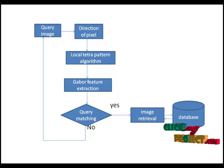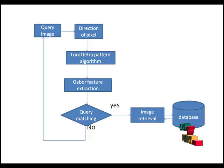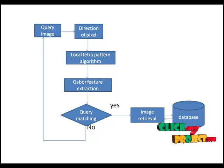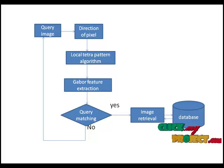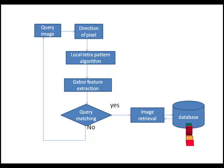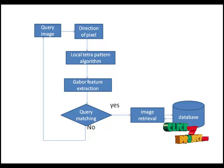This Gabor feature extractor extracts the features relative to their binary values. Then these binary values are given to query matching. In this stage, it checks the matching relevant to each and every image in the database. For the matched features, it extracts the images equal to that given query image. Finally, we retrieve the images equal to the given query image from the database.